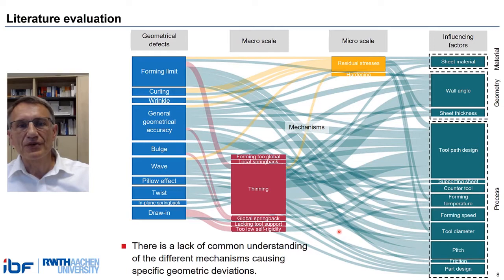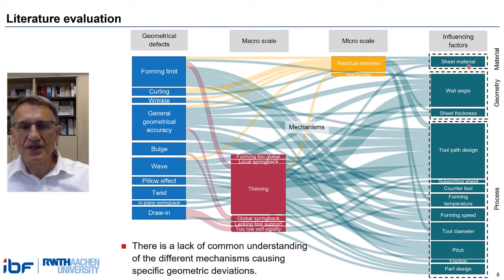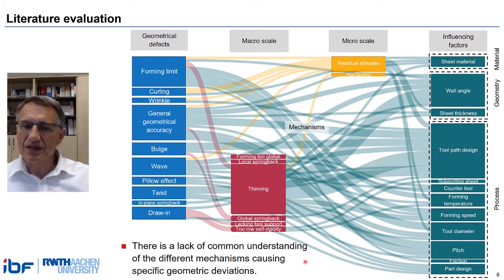There is a tremendous amount of publications which at least partly cover accuracy in incremental sheet metal forming. These papers describe typical geometric defects like curling, wrinkles, bulges, waves and so on. They also list influencing factors like forming speed, tool diameter, pitch, friction and so on. Some of them mention physical mechanisms, which may be classified as being active on the macroscale or on the microscale, like residual stresses. Our feeling, however, is that there is still a lack of common understanding of the different physical mechanisms causing specific geometric deviations, and a lack of common language.